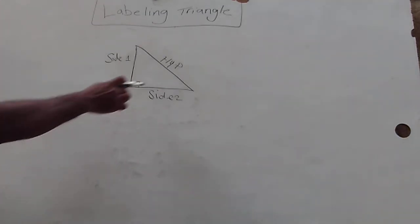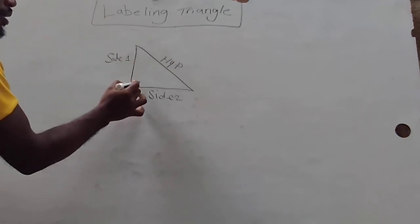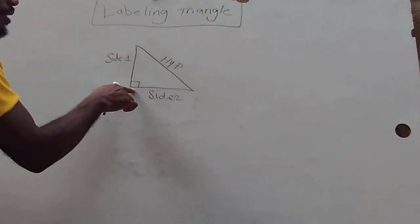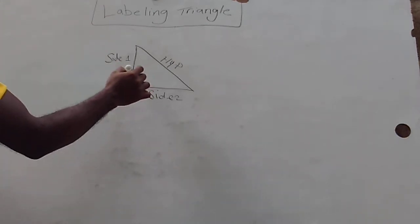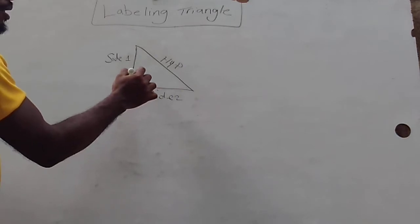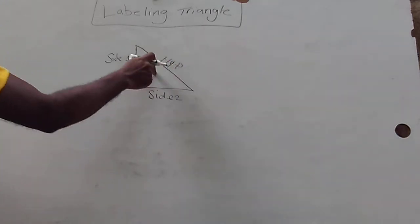However, as I said, this box here that represents the right angle can serve as an arrow pointing to the hypotenuse.